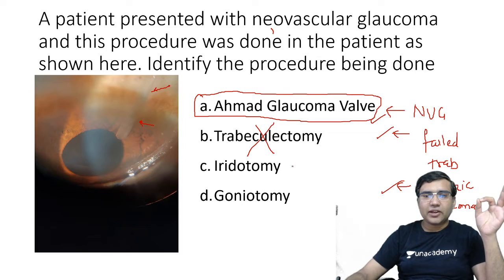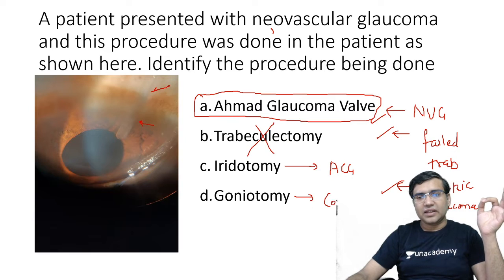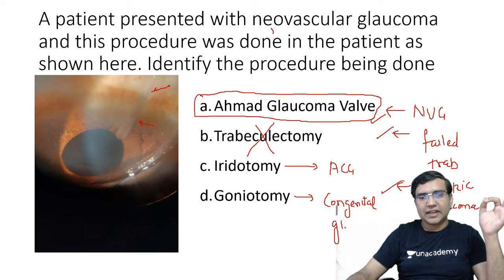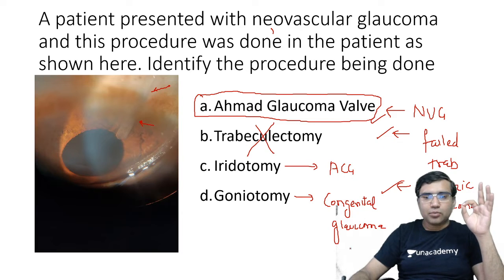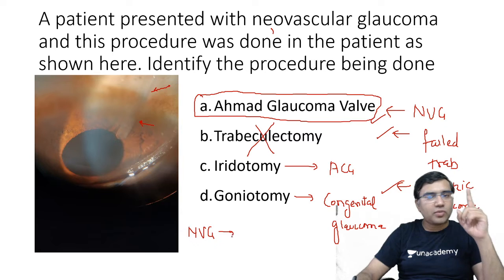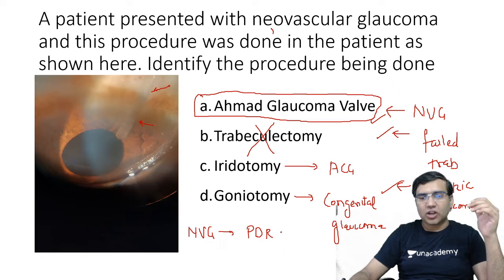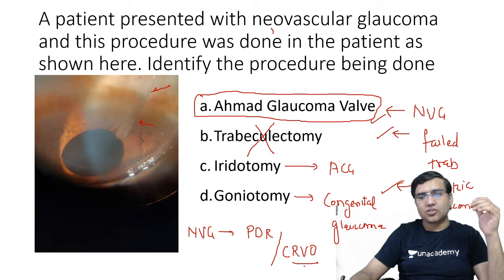Remember: iridotomy is done in angle-closure glaucoma, and goniotomy — which is peeling of the trabecular meshwork — is done in cases of congenital glaucoma. Also, the most common cause of neovascular glaucoma in India is proliferative diabetic retinopathy. If that is not given as an answer option, then the answer is central retinal venous occlusion.